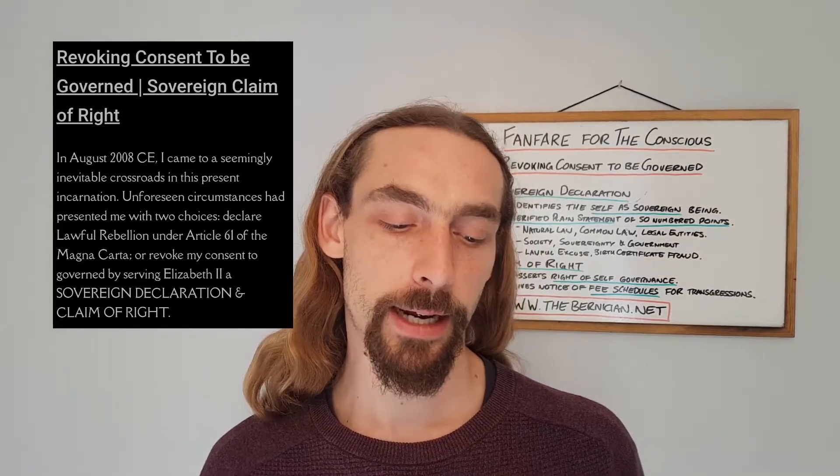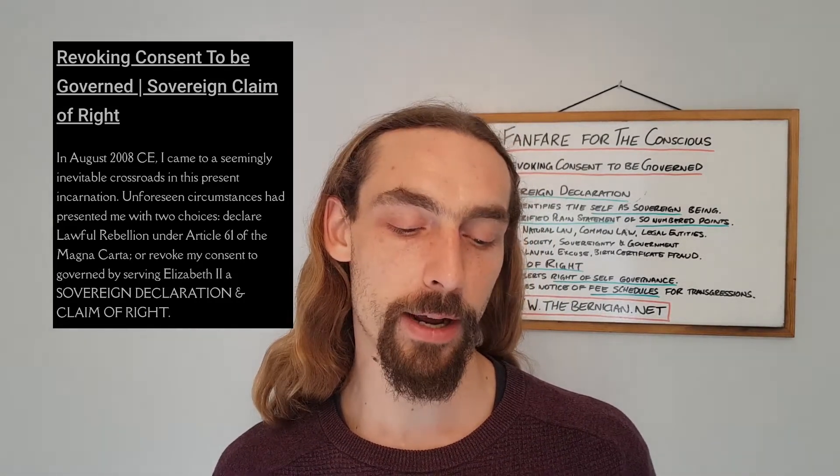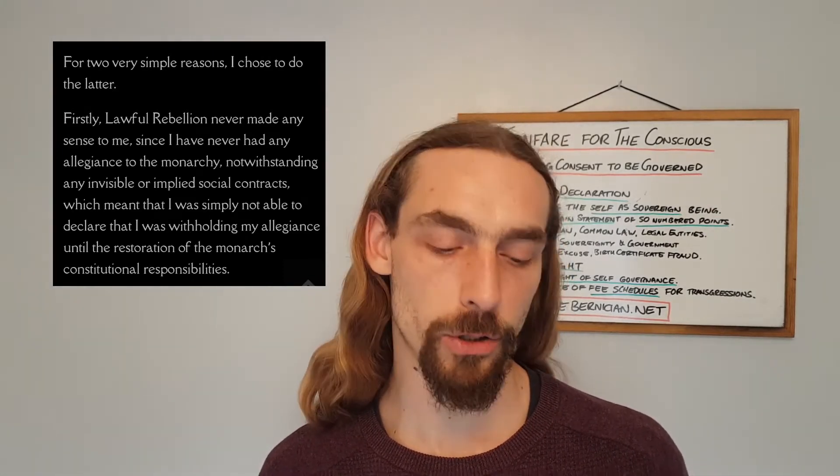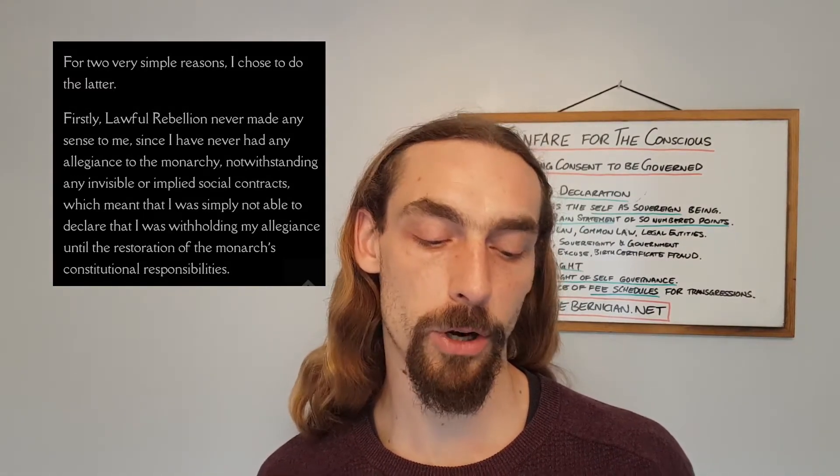As posted on the blog, 3rd of October 2020: revoking consent to be governed, sovereign right of claim. In August 2008 CE, I came to a seemingly inevitable crossroads in this present incarnation. Unforeseen circumstances had presented me with two choices: declare lawful rebellion under Article 61 of Magna Carta, or revoke my consent to be governed, serving Elizabeth II a sovereign declaration and claim of right. For two very simple reasons I chose to do the latter. Firstly, lawful rebellion has never made any sense to me since I never had any allegiance to the monarchy, notwithstanding any invisible or implied social contracts, which meant I was simply not able to declare that I was withholding my allegiance until the restoration of the monarch's constitutional responsibilities.